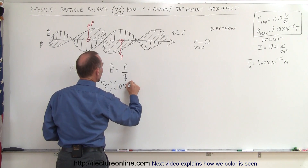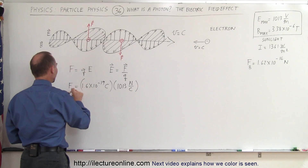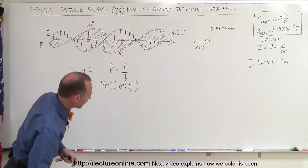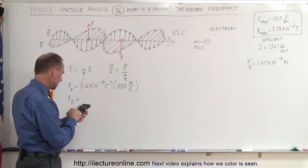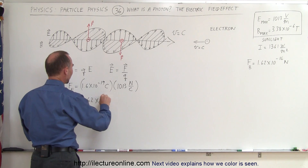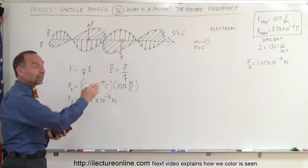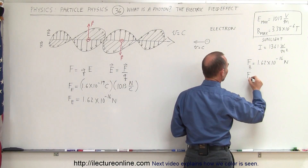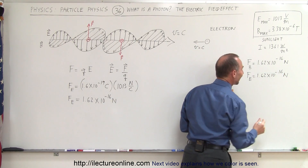So 1.6 × 10⁻¹⁹ times 10¹³ Newtons per Coulomb gives us 1.62 × 10⁻¹⁶ Newtons — the force caused by the electric field at the maximum oscillation strength. Notice that's the exact same number we calculated for the magnetic field oscillation. The force caused by the electric field is also 1.62 × 10⁻¹⁶ Newtons — exactly the same.